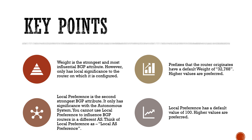The second BGP path attribute I want to discuss is called local preference, and that is the second strongest BGP path attribute. It's important to note that local preference only has significance within the autonomous system. So whilst weight can be used to influence a single router's decision, local preference can be used to influence all the routers within an AS's decision. But you cannot use local preference to influence BGP routers' decisions in a different AS — think of local preference as local AS preference.